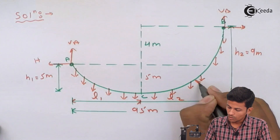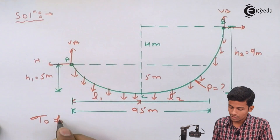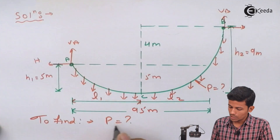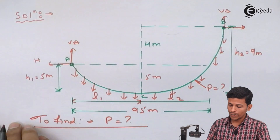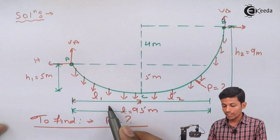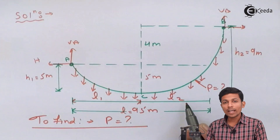P is the unknown — the UDL over the entire cable. To proceed, we are given the total span L but not the individual values L1 and L2. So first we have to find the values of L1 and L2.